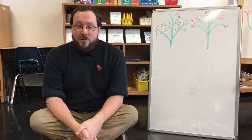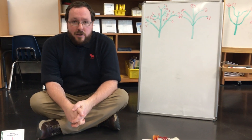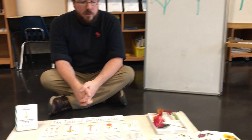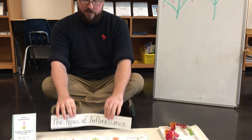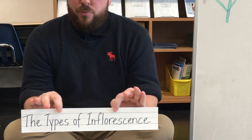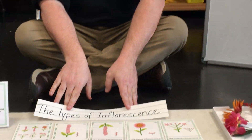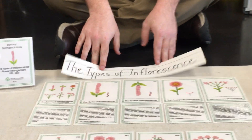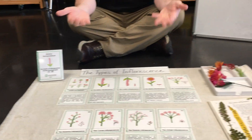Good afternoon, boys and girls. Welcome to a botany circle. Today we were working with the types of flower inflorescence. First, what is inflorescence? It's just a fancy word for the way the flowers are arranged onto the peduncle.